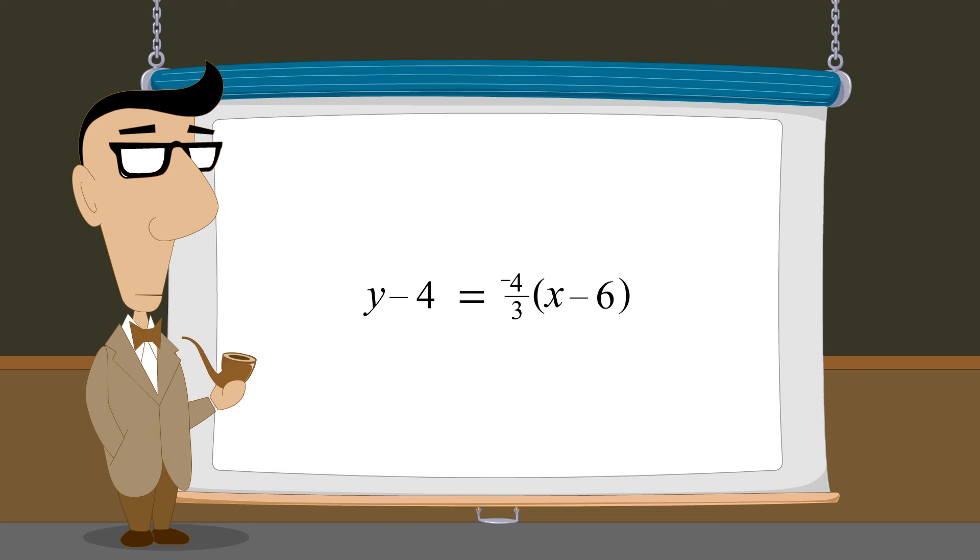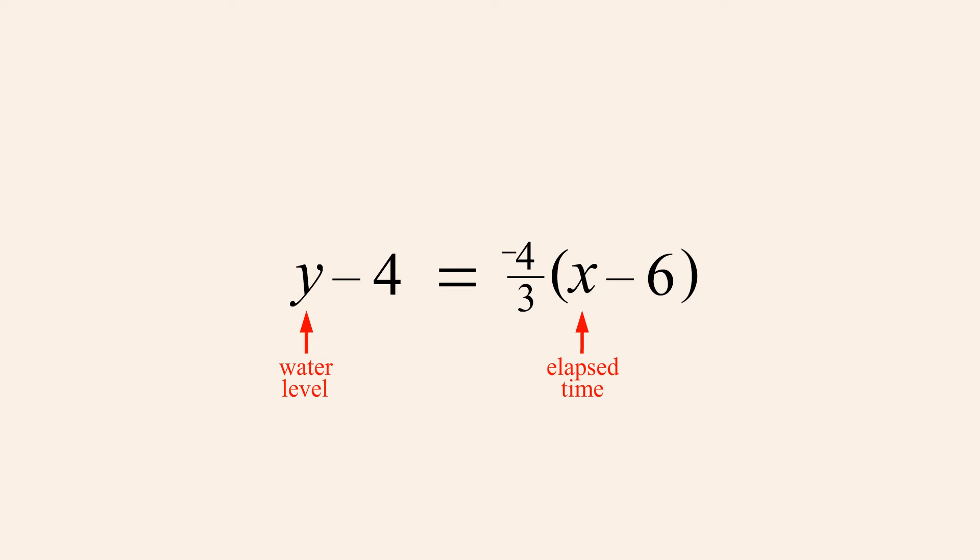Now that we have an equation which represents water level y, as a function of elapsed time x, we can plug in different values for x to see what the water level will be at those points in time. For example, an elapsed time x, of zero, corresponds to the time when the drain was first opened. If we set x to zero, then the resulting value of y will tell us the initial depth of the pool. Completing the arithmetic, zero minus six is negative six, and negative four-thirds times negative six is positive twenty-four-thirds, or eight. Adding four to both sides of the equation allows us to cancel negative four on the left, leaving us with y equals eight plus four, or twelve. So the initial depth of the pool when the elapsed time x was zero was twelve feet.